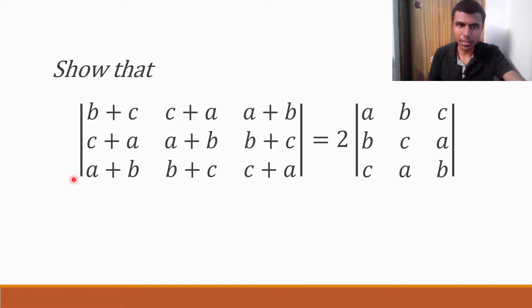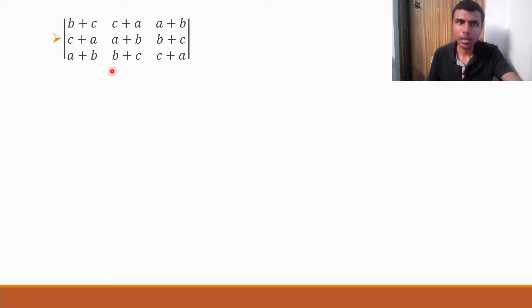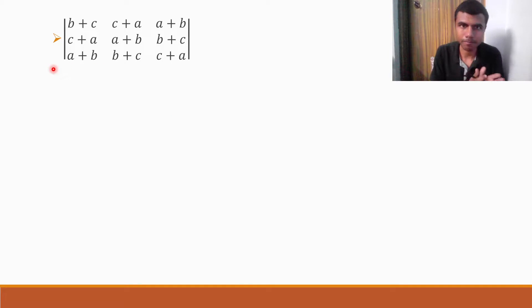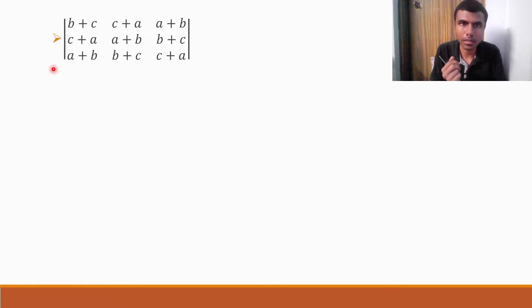Here we have to show that this determinant is equal to two times of this determinant. I'm going to go slow, so please stay with me. This is the given determinant. Instead of just mugging up, I want you guys to understand how it works and how the process goes.